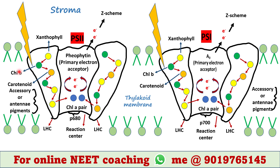In each LHC, different types of pigments are present, such as chlorophyll b which is green in color, carotenoid which is orange in color, and xanthophyll which is yellow in color. These pigments are called accessory pigments or antenna pigments, and they are found in large numbers in the LHC.